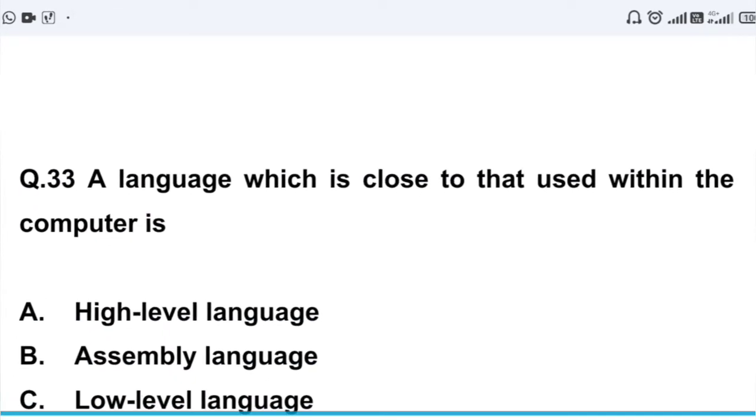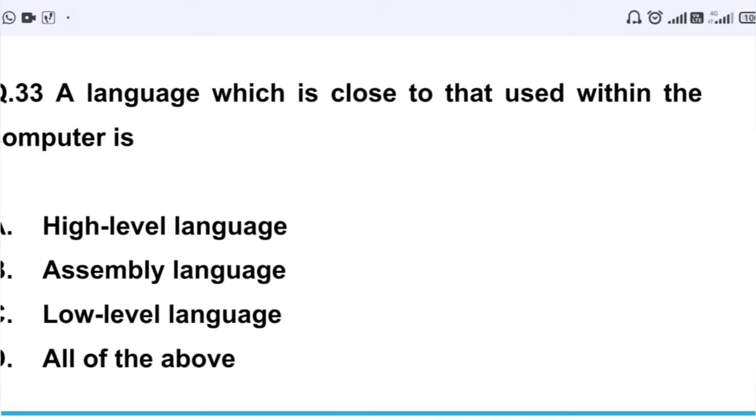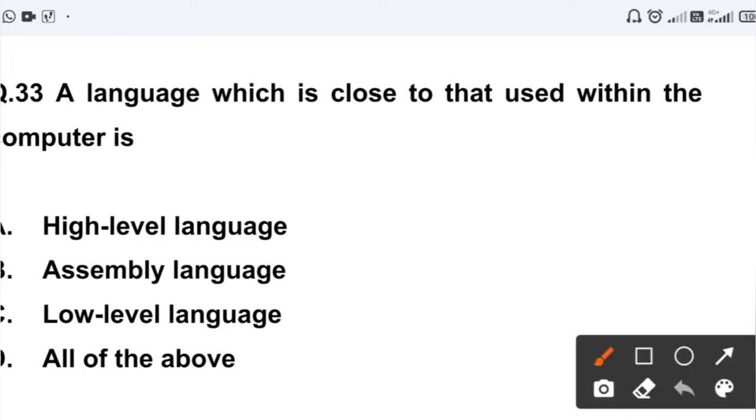Question number 33: A language which is close to that used within the computer is - Option A: high level language. Option B: assembly language. Option C: low level language. Option D: all of the above. So this correct answer is low level language, because the language used in computer is machine language, and we call it low level language. So this answer is low level language, machine language.